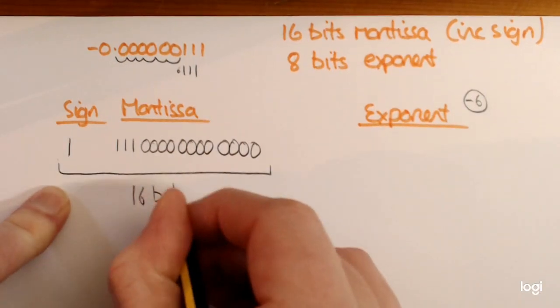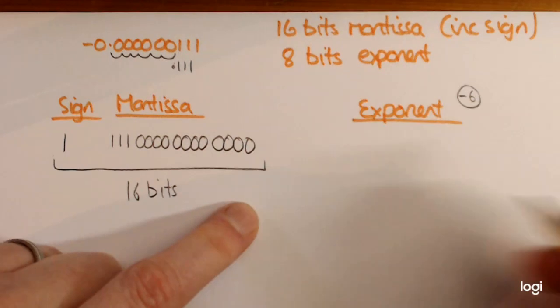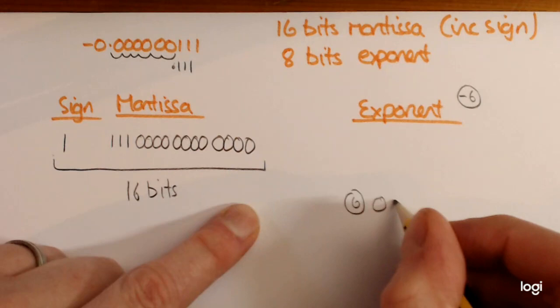16 bits for the Mantissa. Exponent, well, you have to think, what is 6? It's a positive. So that's your 2's complement.